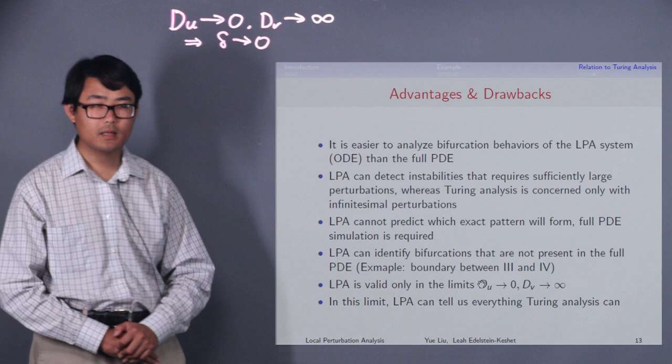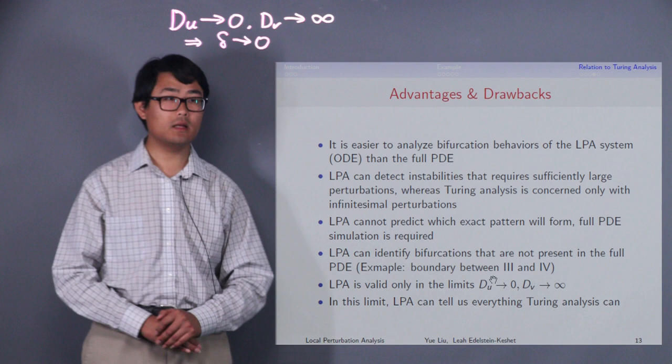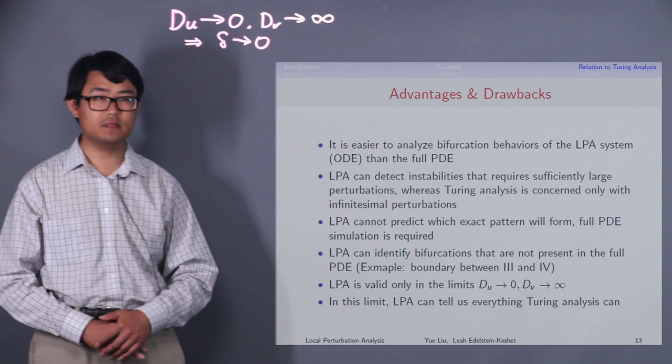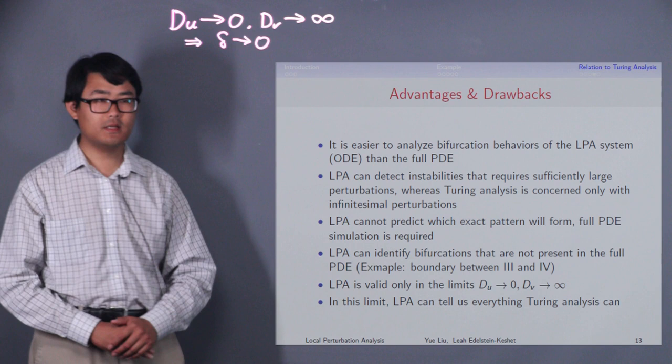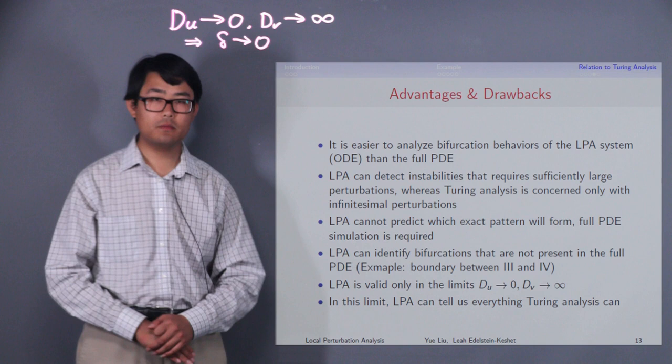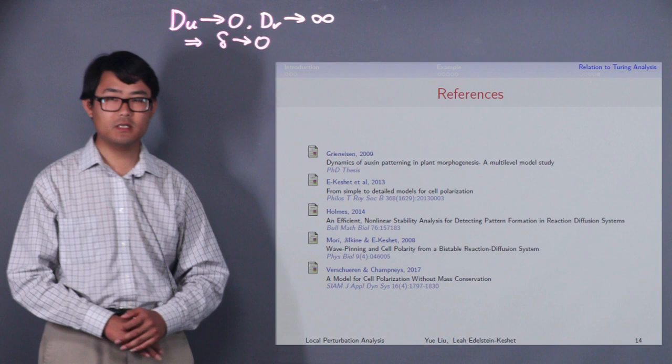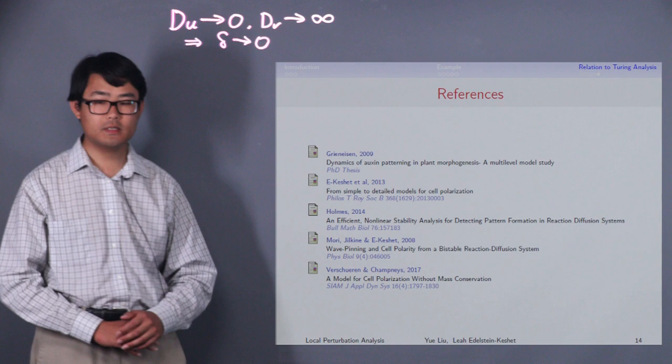LPA is valid only in the limit of dU going to 0 and dV going to infinity. Turing analysis does not have this restriction. However, in this limit, LPA can tell us everything Turing analysis can. And in fact, there is a paper by Holmes in 2014 that relates the matrices produced by LPA and Turing analysis and discuss how their eigenvalues are related.